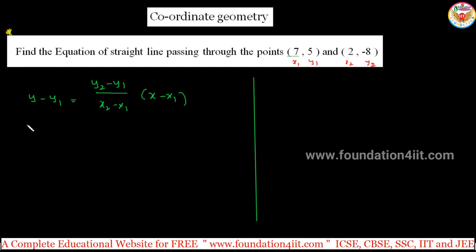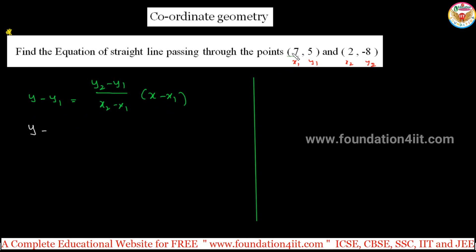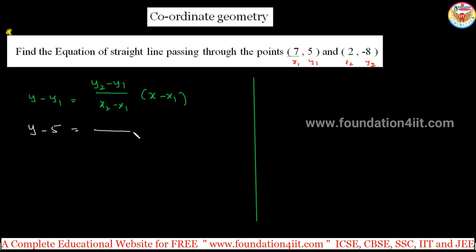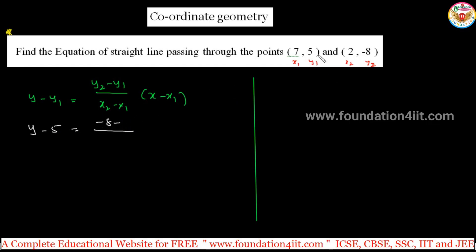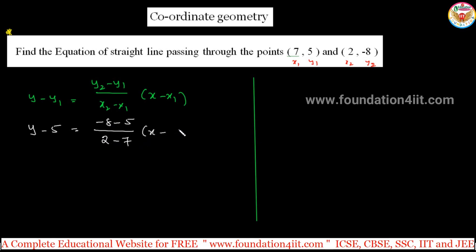Let us solve this problem using the traditional method, then I will explain the simpler Vedic method. The first point gives x1 = 7 and y1 = 5; the second point gives x2 = 2 and y2 = -8. Substituting: y minus 5 equals minus 8 minus 5, over 2 minus 7, in the bracket x minus 7.